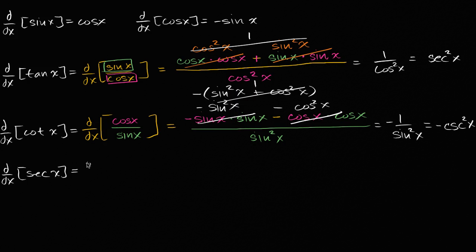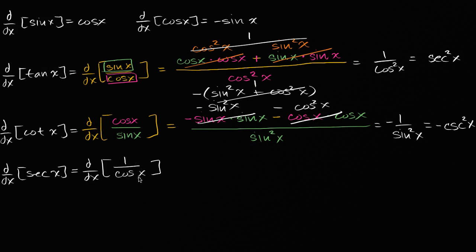Secant of x is the same thing as one over cosine of x — that's just the definition of secant. There are multiple ways you could do this. When you learn the chain rule, that might be a more natural approach. But we know the quotient rule, so we will apply the quotient rule here. The quotient rule can actually be derived based on the chain rule and the product rule, but let's just apply the quotient rule right here.